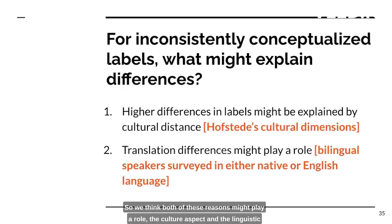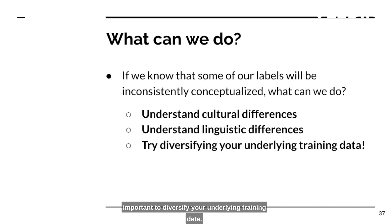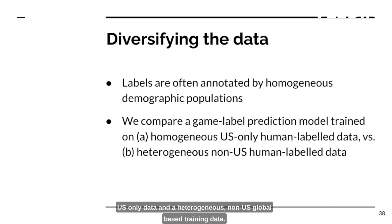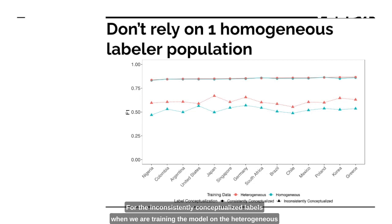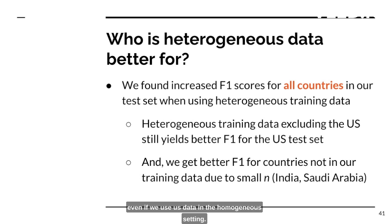So we think both the cultural aspect and the linguistic aspect play a role. This leads to the question of what do we do now? It's important to diversify your underlying training data. To prove this point, we compare a game label prediction model trained on homogeneous US-only data versus heterogeneous non-US global-based training data. We found a much better F1 score for inconsistently conceptualized labels when training on heterogeneous data — shown as the red triangle line — with much improvement over the blue triangle line. Not only do we see improvement for all countries, but also for the US specifically, even when US data was used in the homogeneous setting. This global transfer learning ability definitely benefits out-of-sample populations as well.